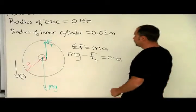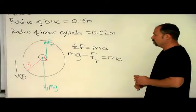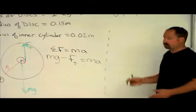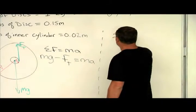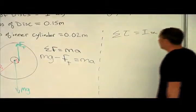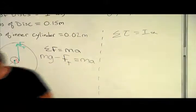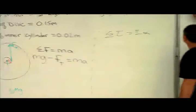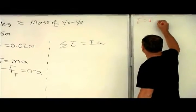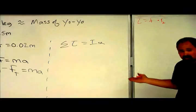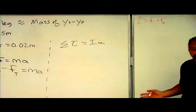We don't know what the tension force is, but we have another handle, and that's Newton's second law for rotation. So sum of the torques equals I alpha, and we know that torque, I'll write it over here on the side, torque is equal to the force times the perpendicular distance from the rotation axis to the application of the force.